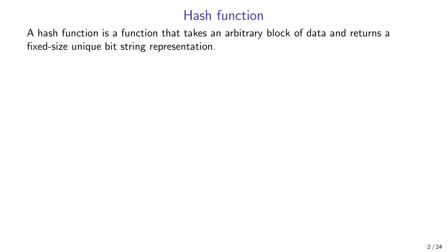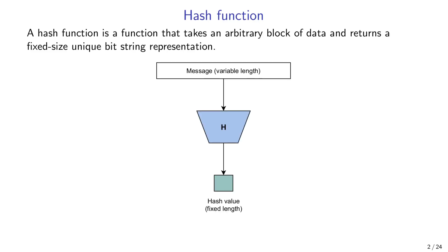So what is a hash function? A hash function is a function that takes an arbitrary block of data and returns a fixed-size unique bitstring representation of that input data. Here is how we can visualize this function. So it takes some input and returns some output. We can pass a variable length message to the function and it will calculate and output a unique fixed length representation of that input message.